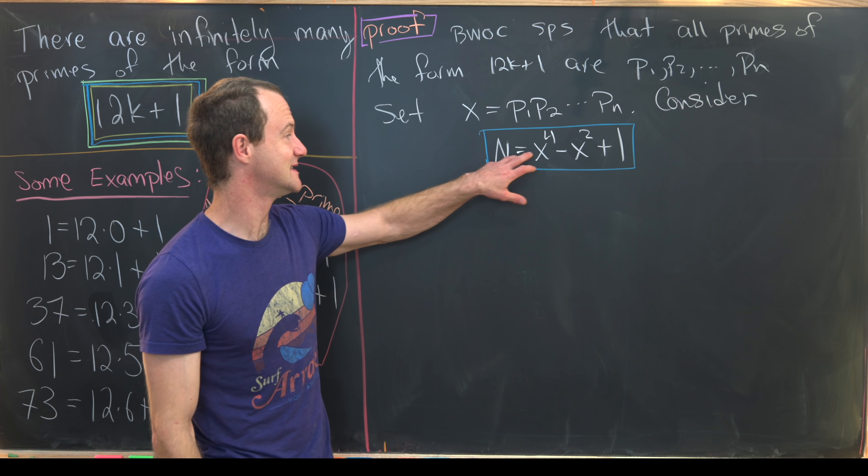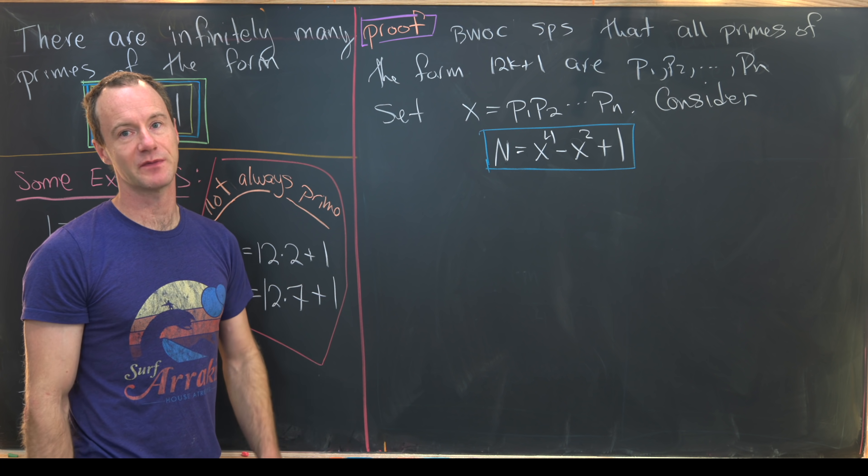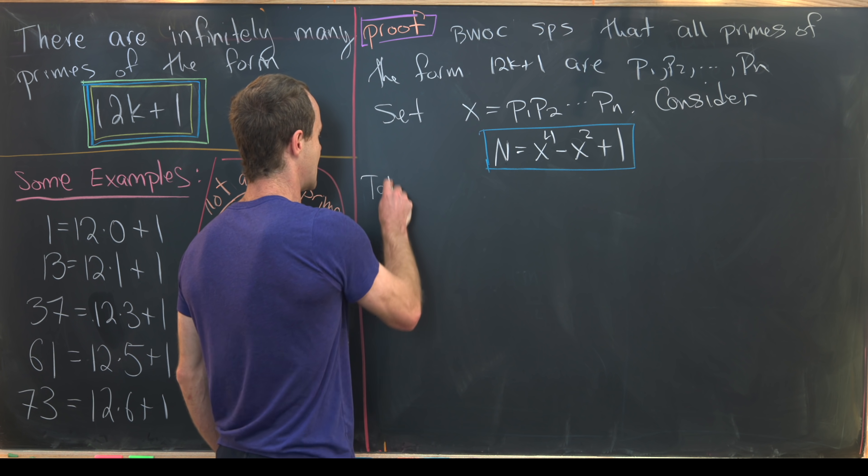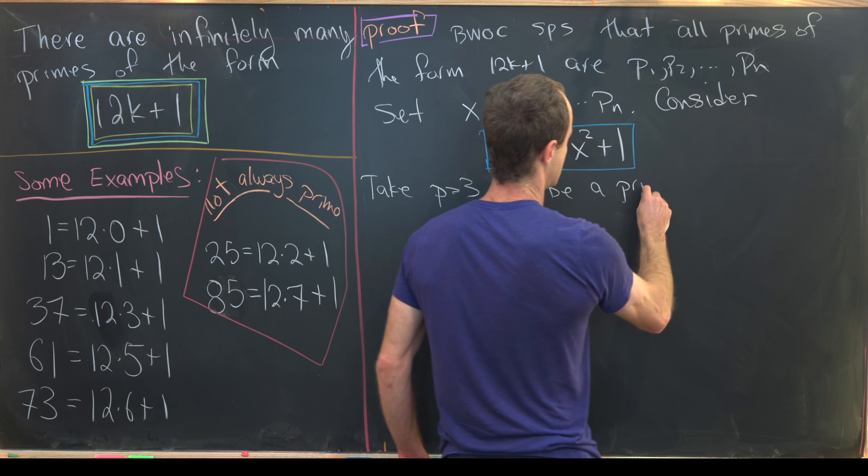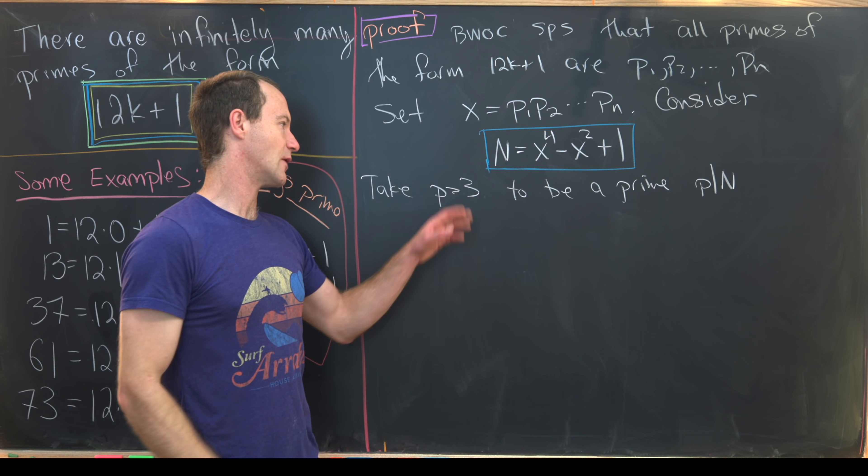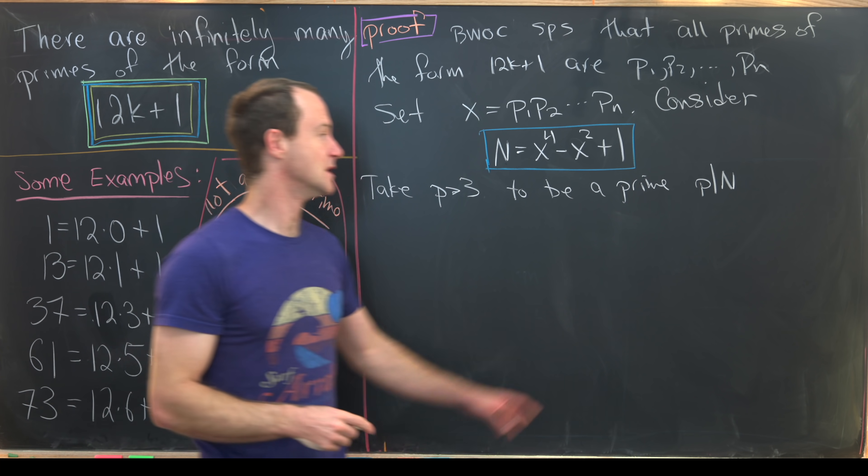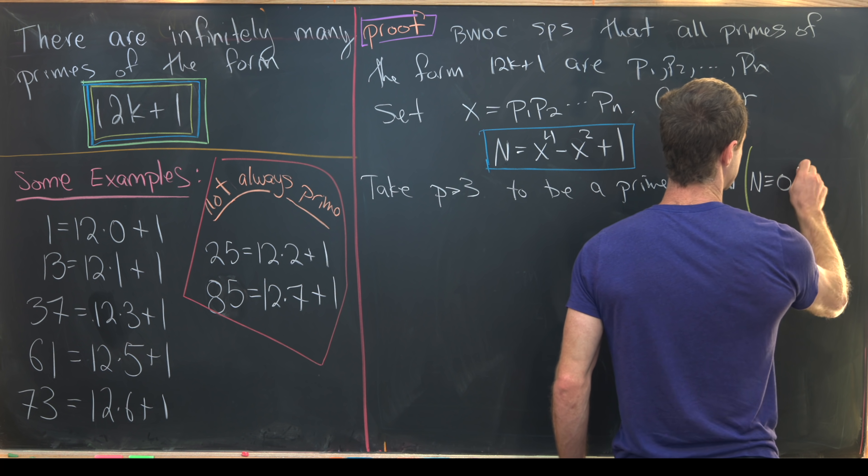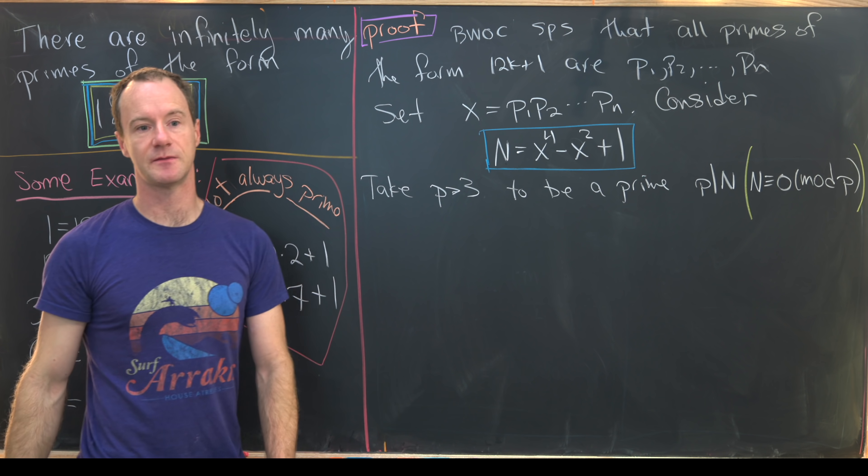So next, since this is a natural number, it has a prime divisor. We know that because by the fundamental theorem of arithmetic, every natural number can be factored into primes. So now let's take p bigger than 3 to be a prime such that p divides n. So I'll let you guys think about why we're able to pick this p to be bigger than 3. But that shouldn't be too hard to think about. But notice if p divides n, that's the same thing as n is congruent to 0 mod p using the notion of congruence modulo p.